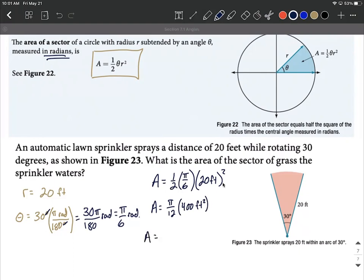Now for an exact answer, we can go ahead and visualize this as being over 1, so it's a fraction. So we can multiply numerators together, 400 pi, multiply denominators together, 12, and our units are going to be square feet or feet squared. And with just a little bit of reducing down here, we can go ahead and say both multiples of 4, numerator and denominator. The exact answer would be 100 pi over 3 square feet.